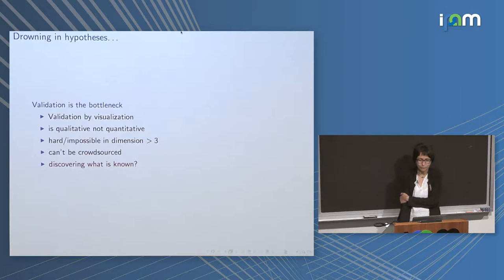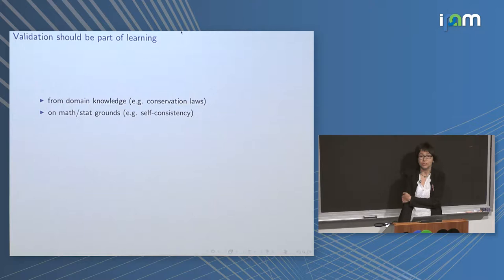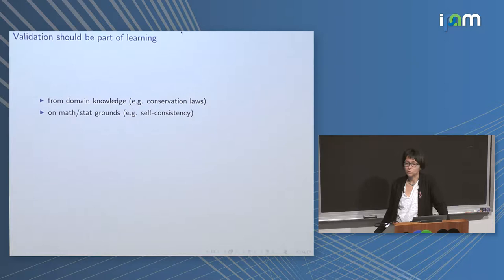Most surprising things are not true — they are just errors of some kind — but some of them are surprising and true, and that's what moves science. That is what we call discovery. My argument to people who do machine learning is that validation should be part of machine learning; people working on methods should also work on methods of validating what they output.